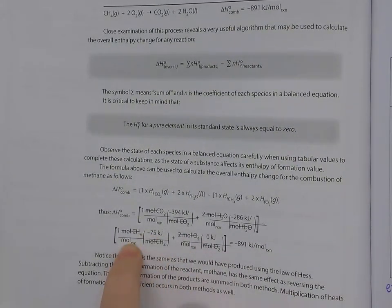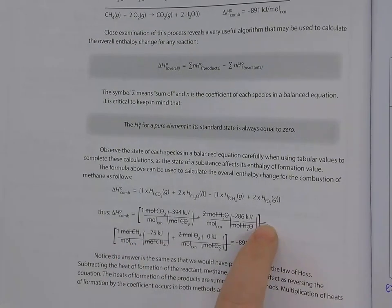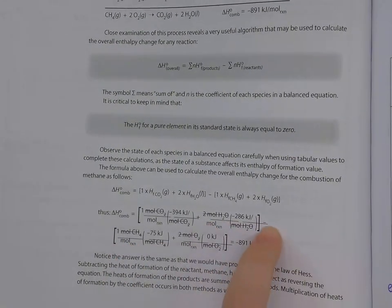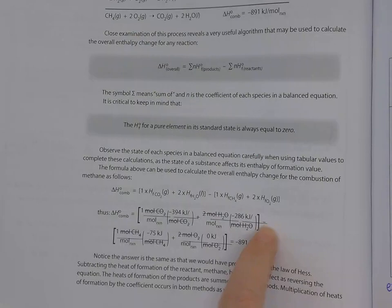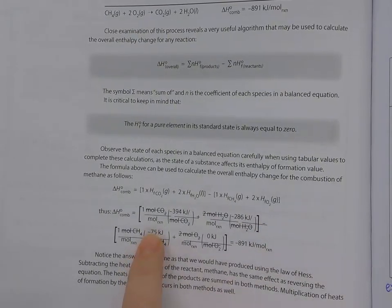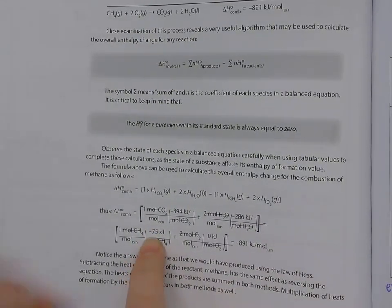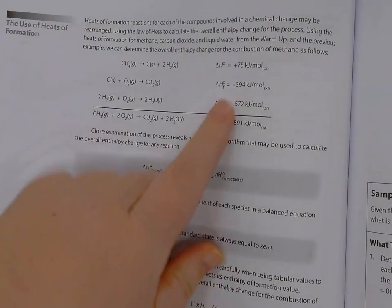So you notice, something to notice here is we are subtracting, and I know the lines are kind of off here in their editing, but we're subtracting a negative. So that's going to flip the sign on that 75 and make it positive, which is what happened up here.